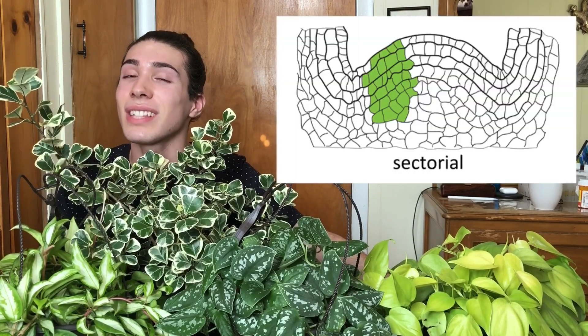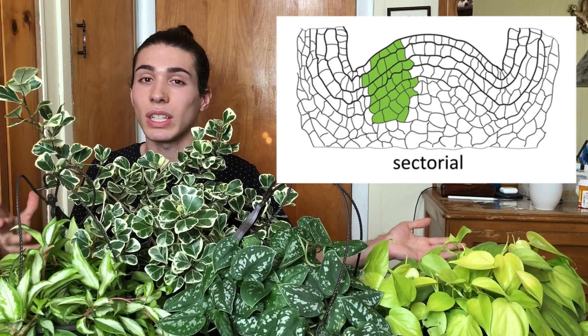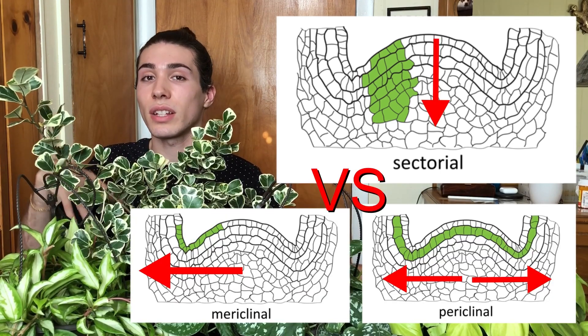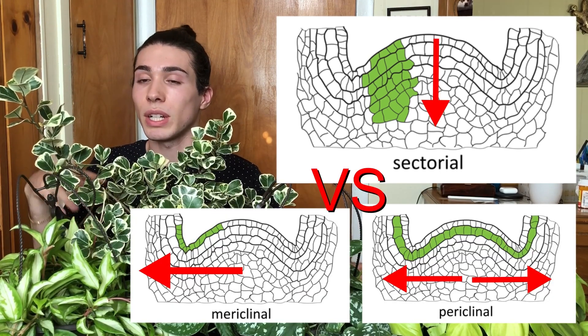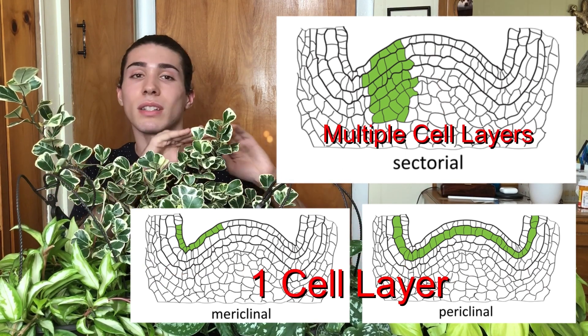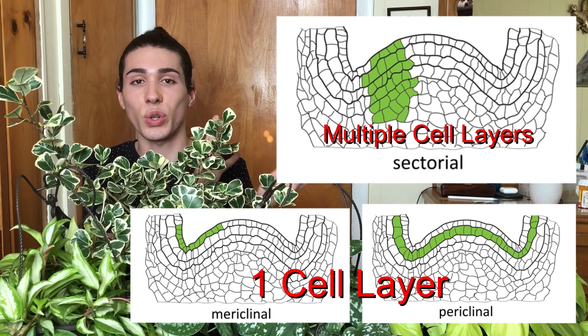Lastly, we're going to talk about sectorial chimeric variegation. This is where the achlorophyllous or differently colored cells extend down beyond the surface of the meristem deeper into the cell layers, and exist in a chunk of the meristem — it doesn't cover an entire layer, just a section, which is why it's called sectorial. I don't have a Monstera Albo Borsigiana, so I'm going to show you a different plant that features this type of chimeric variegation.